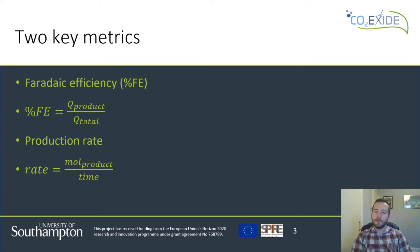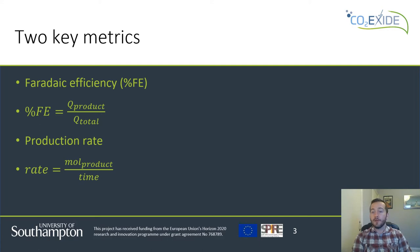Before we go into the details it's important to highlight two key metrics that will come up a lot in this presentation. The first is the Faradaic efficiency. This is a ratio of the charge spent producing the target product against the total charge spent in the reactor including all possible side reactions and background processes. This is essentially a measure of selectivity, so we want this to be as close to 100% as possible. The second metric is the production rate, which is quite simply the amount of product that we can make over a given time. Ideally this should be as large as possible. The issue that we tend to run into is that it's very difficult to design a system that makes both of these metrics large at the same time, and we'll see reasons for that when we dive into the details of our electrochemical reactions.